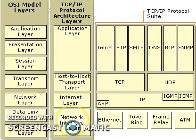The first layer is the network interface layer, also called the link layer, data link layer, or host network layer. It is the interface to the actual network hardware. This interface may or may not provide reliable delivery and may be packet or stream oriented. TCP/IP does not specify any protocols here but can use almost any network interface available, illustrating the flexibility of the IP layer. Examples of such protocols are shown in the diagram.